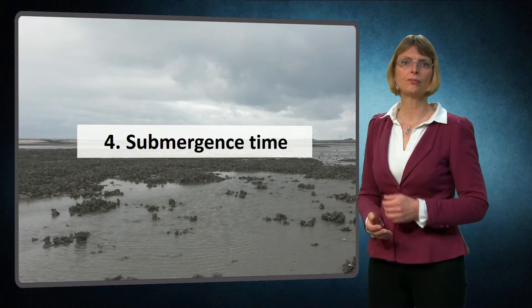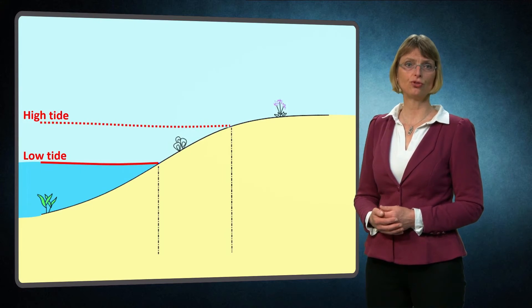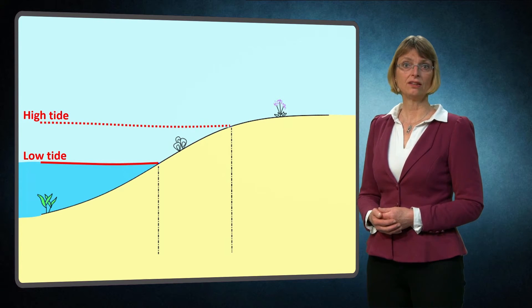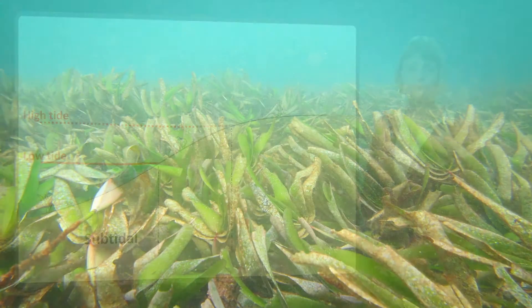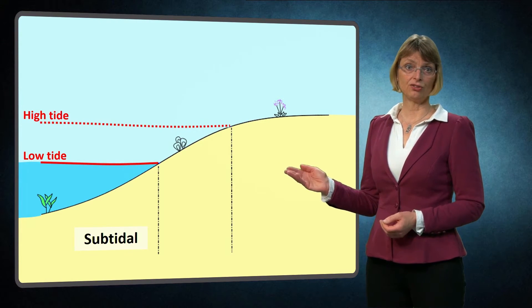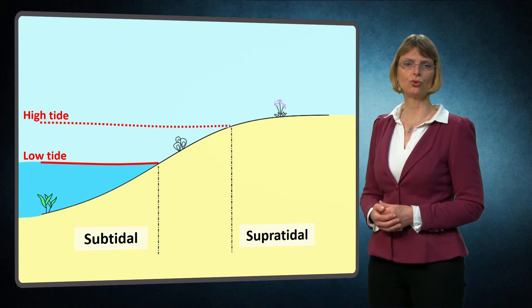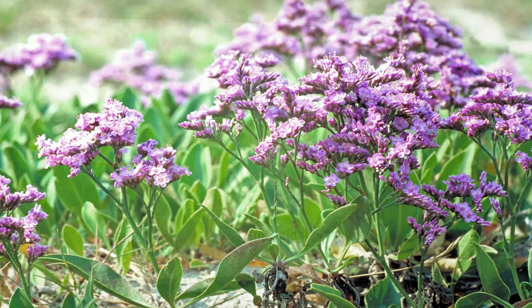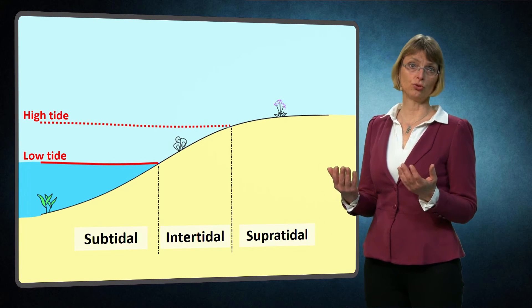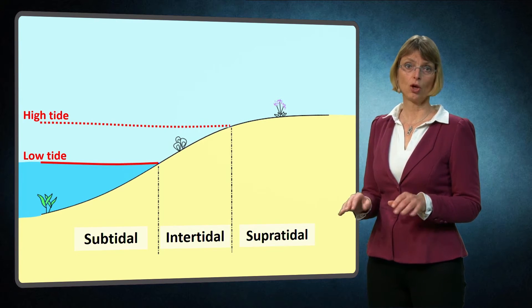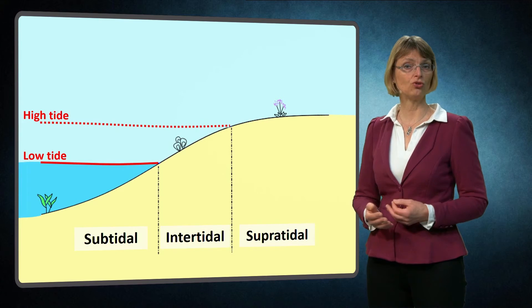A fourth abiotic factor relevant to ecosystem development is submergence time, which is reflected in tidal zonation. The lower tidal area that is constantly submerged is termed subtidal — here we can find seagrasses and coral reefs. The upper area that is rarely submerged is called the supratidal area, where we can find species that can tolerate an occasional salty bath, such as the purple sea lavender. The area in between is the intertidal area, which is air exposed during low tides and submerged during high tides. Oysters and mussels are able to live in this area, as they can tightly close their shells to withstand low tide dryness.